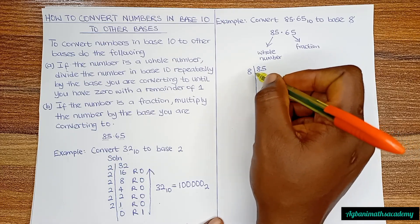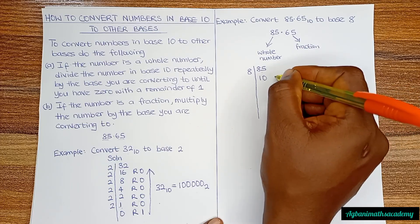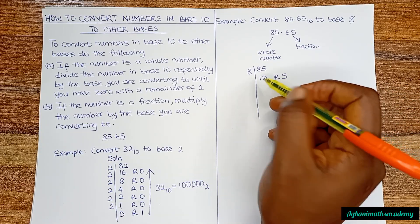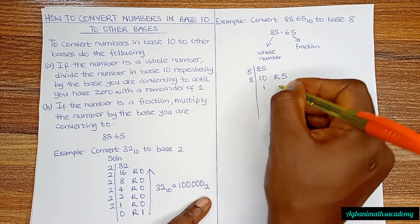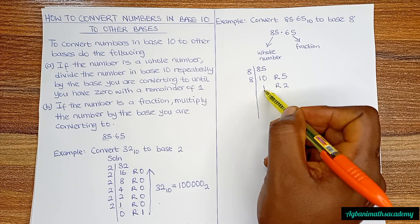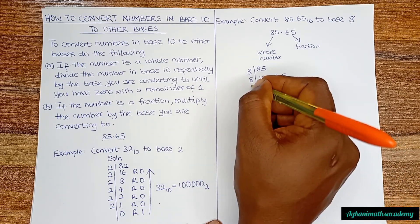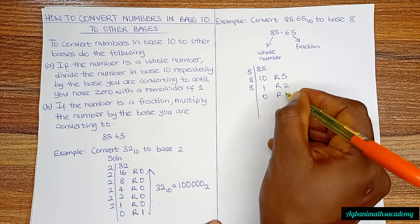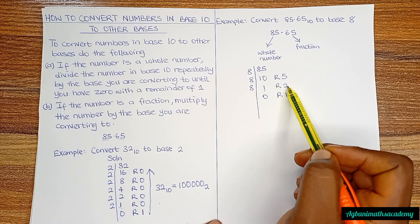85 divided by 8 gives us 10 remainder 5. Then 10 divided by 8 gives us 1 remainder 2. We have not yet reached 0, so we divide again. 1 divided by 8 gives us 0 remainder 1. So we have converted 85 as a whole number to base 8.